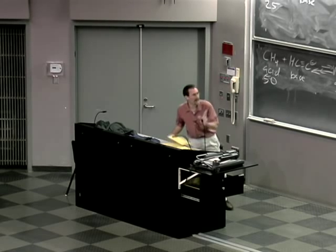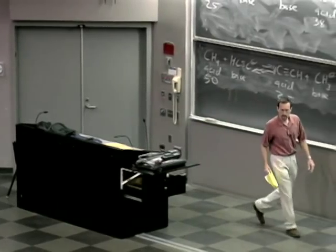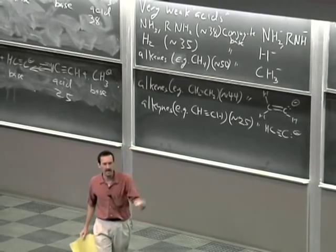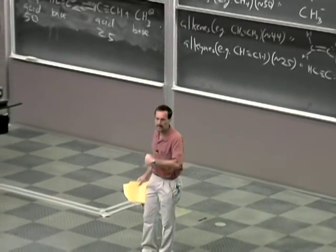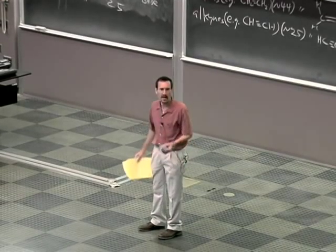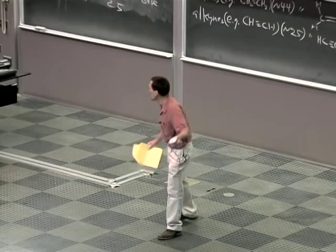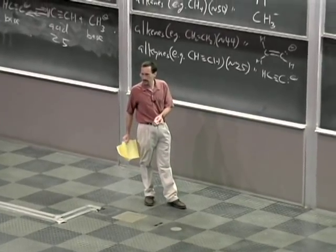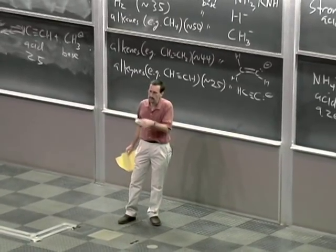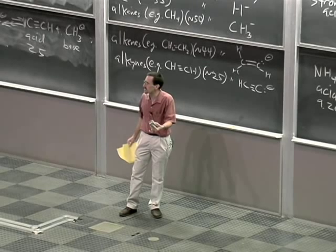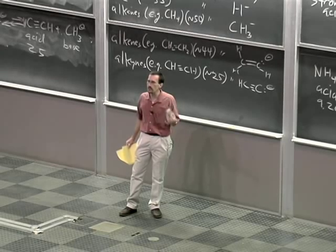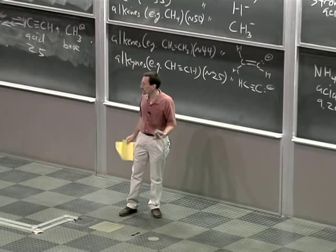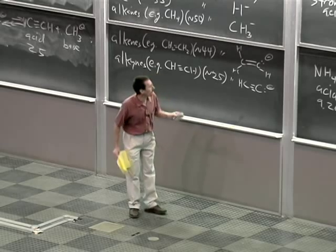Before we go further, I want to take some of those numbers — the pKas of HCl, HF, alcohols — and make some sense of them, because these aren't just numbers; they're periodic trends. When you can see the periodic trends and intuit the factors affecting acid-base stability, you can get a lot of the information from that table at least qualitatively, and you can start to know where many acid-base equilibria lie.